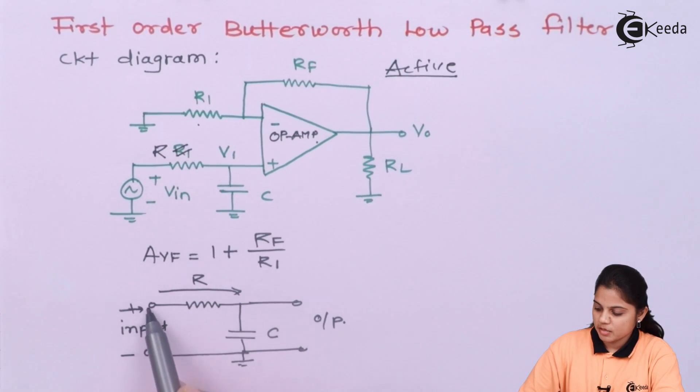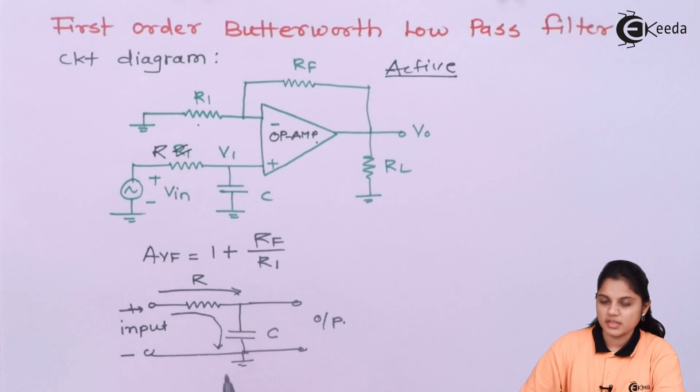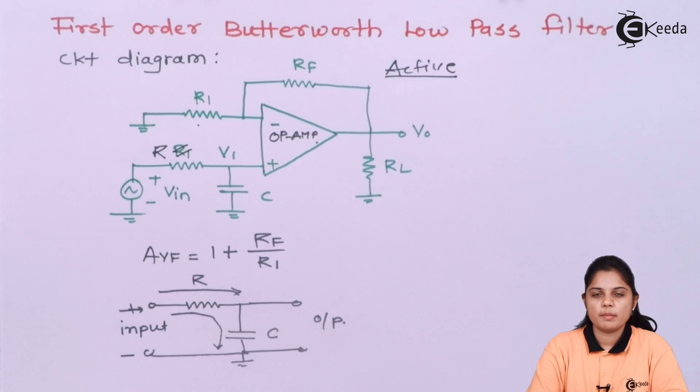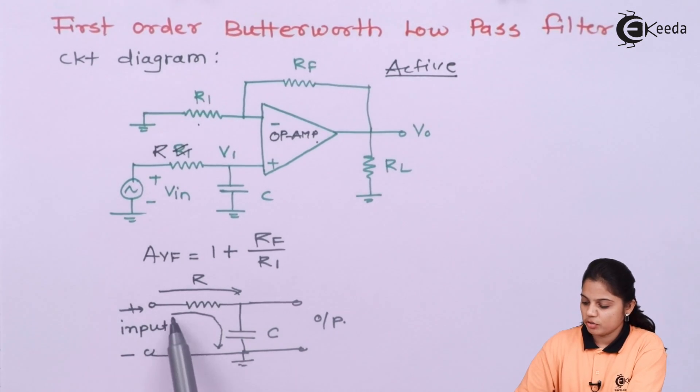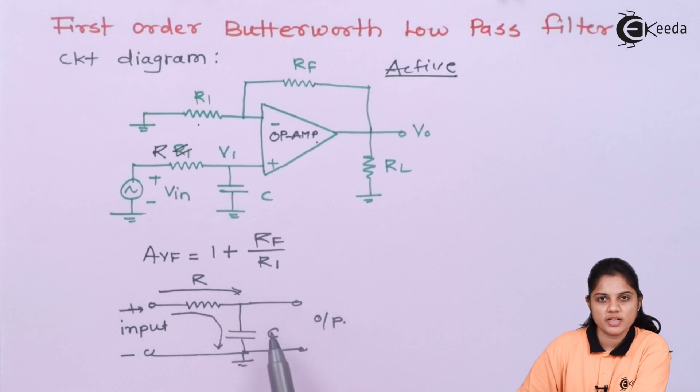Now if there is a positive input supply is given, for a positive supply, if current is flowing like this, the capacitor will start charging. Capacitor is always used to store some charge. So if current is flowing through the device, the capacitor will charge.